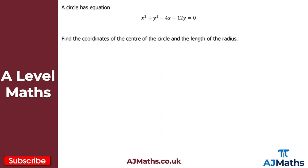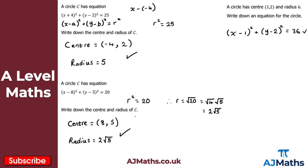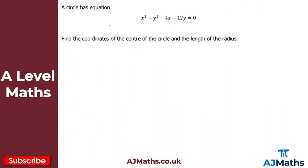Now let's take a look at some trickier questions — more like what you'd see on an exam. We have a circle with an equation where we can't easily identify the center and radius directly. What we need to do is collect the x variables together, do the same with the y variables, and complete the square on those two parts separately. So we have x squared minus 4x, plus y squared minus 12y, all equal to zero.